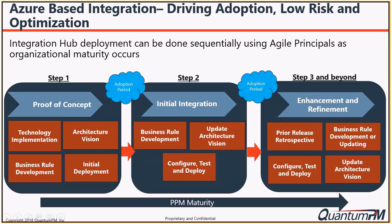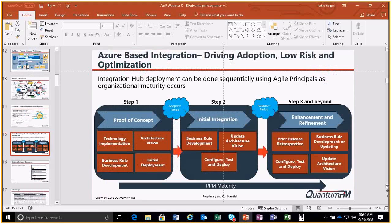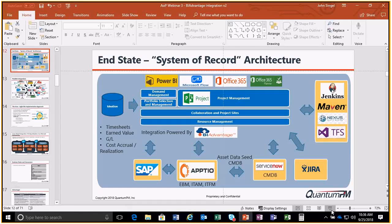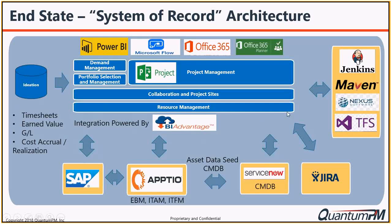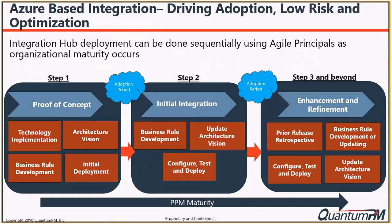Phase one would be a POC. Usually it would focus on getting the technology in place — bring in BI Advantage, get the Azure-based integration hub worked out, and identify the connectors we're going to use. Architecture vision is critical: you need to figure out what the picture is going to look like, what systems are going to do what, what's the ownership of data, what the layers of integration would be, and the business rules associated with this eventual vision — all aligned with corporate strategy.